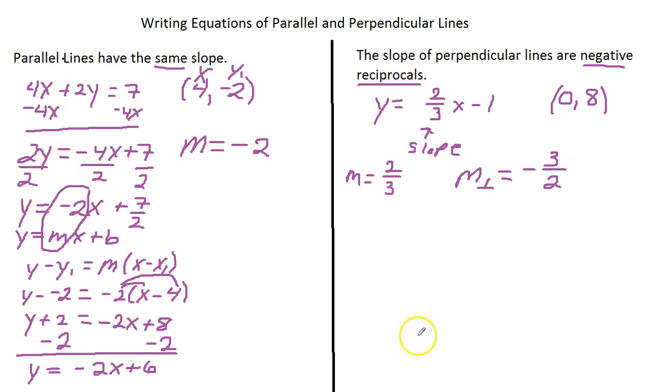Now we're going to use our point slope formula. So we say y minus y subscript 1 equals m, we're using the perpendicular slope, times x minus x subscript 1. Now we're going to plug in the coordinates of our point, y minus 8 equals negative 3 halves times x minus, and our x coordinate is 0.